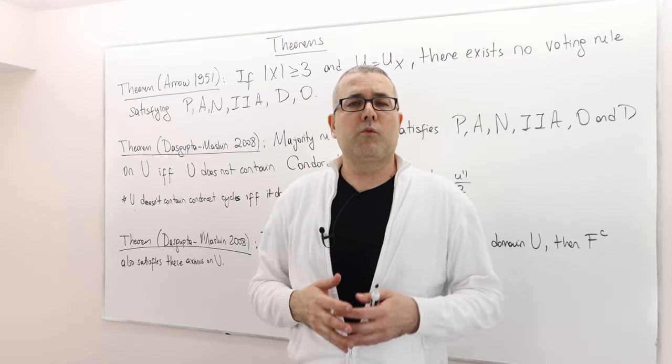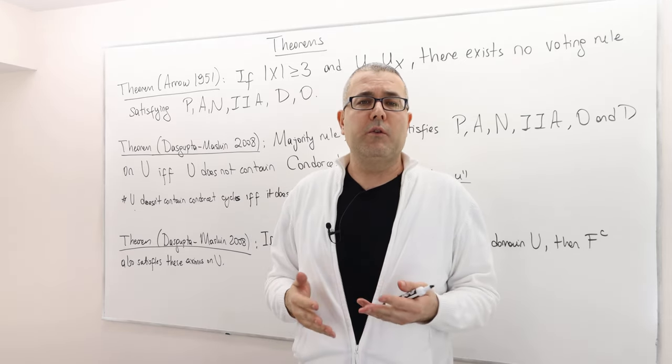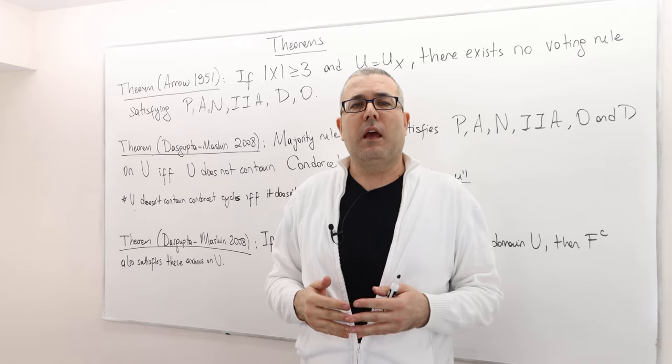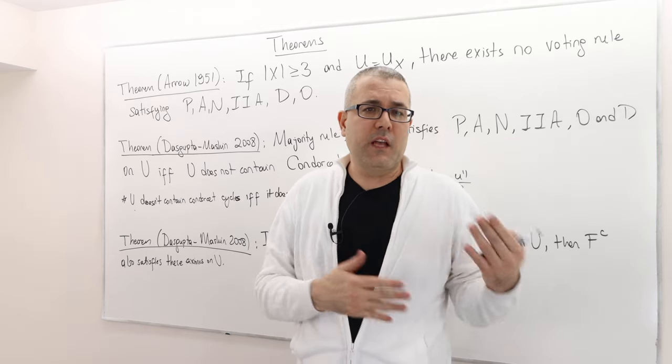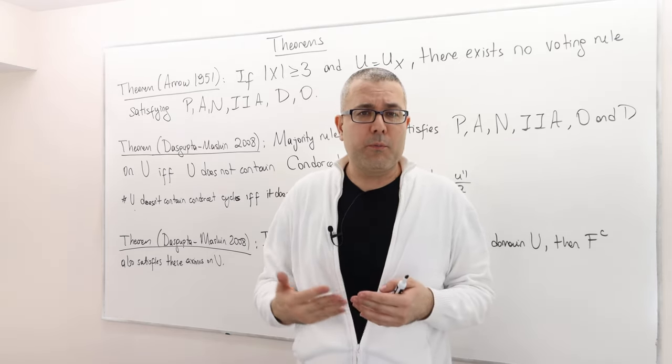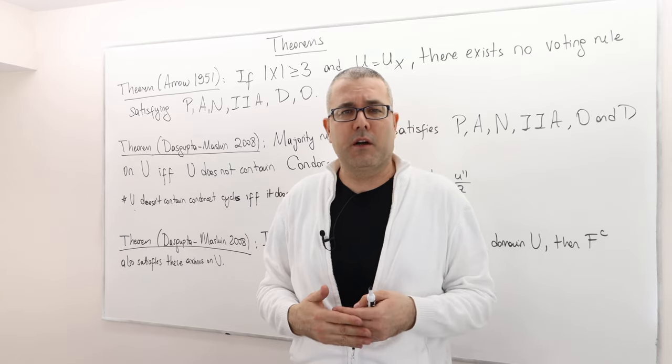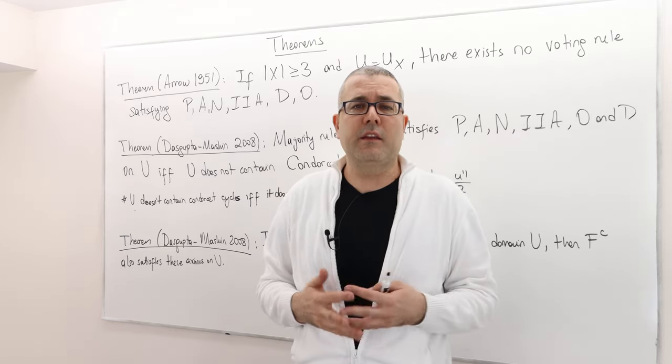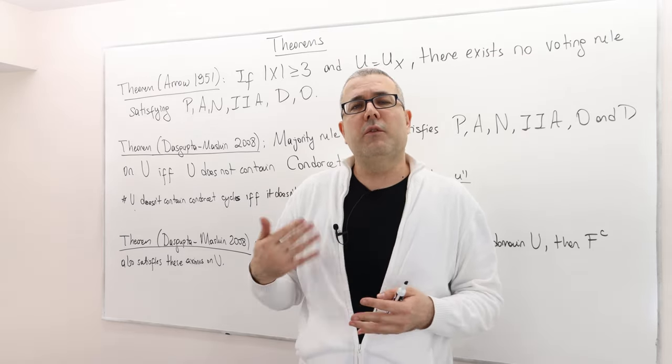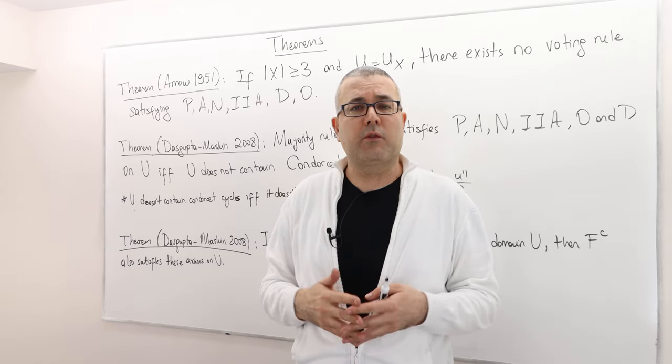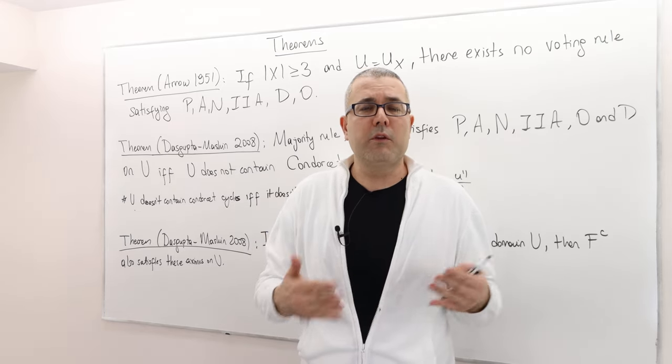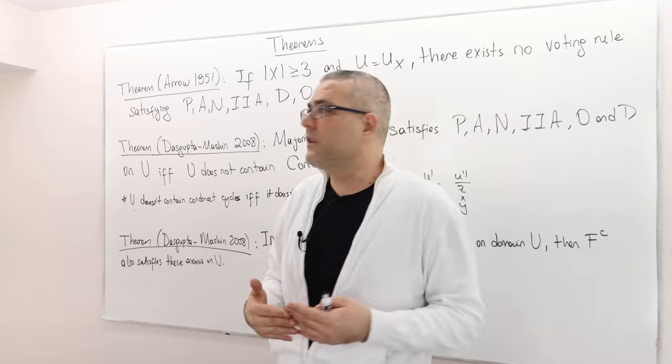Remember we were wondering what voting rule we should pick, and so we talked about some voting rules and some properties which are highly intuitive and reasonable. Now we are going to look at or talk about what voting rules satisfy those properties.